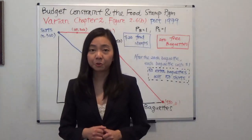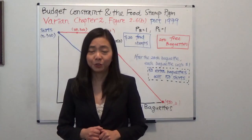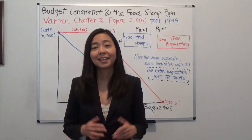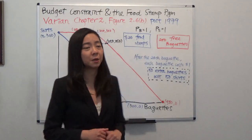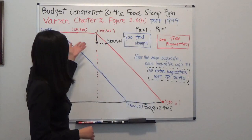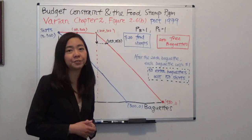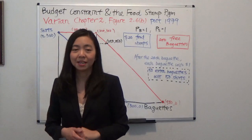Hello everyone, my name is Iris Frans. I'm Lian Wan-Ru. Today we're going to continue to talk about the budget constraint and the food stamp program.